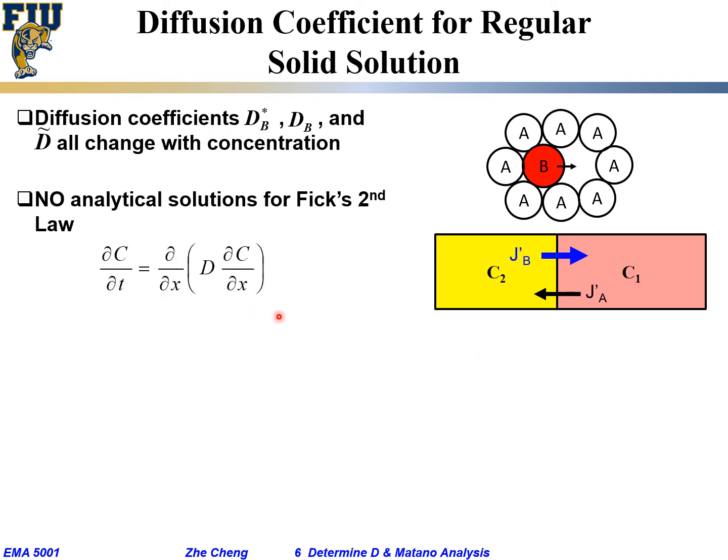This is our Fick's second law. The left side states how fast does local concentration change with time, but what is inside, it's actually the negative of the diffusional flux based on Fick's first law: D times concentration gradient. Because we said now diffusion coefficient is not a constant, we cannot take the D out, and quite often we don't have an analytical solution at all.